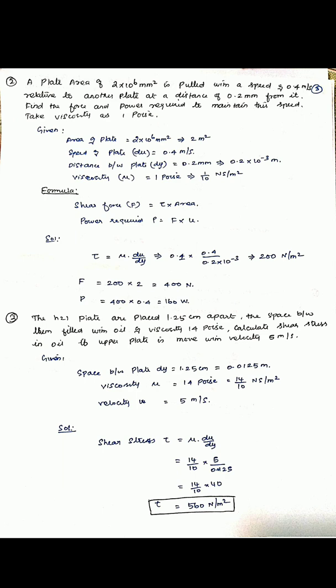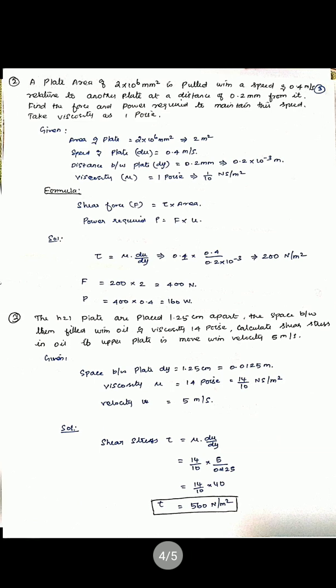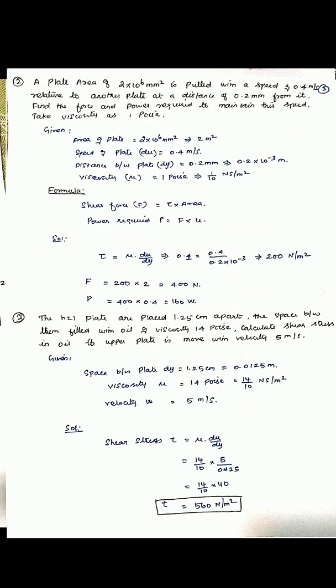Shear force: stress tau equals force divided by area, so force equals stress times area. Power required P equals force into velocity. Tau equals mu into du/dy equals 0.1 × 0.4 / (0.2 × 10⁻³) equals 200 N/m². Force equals 200 × 2 equals 400 N. Power equals 400 × 0.4 equals 160 watts.